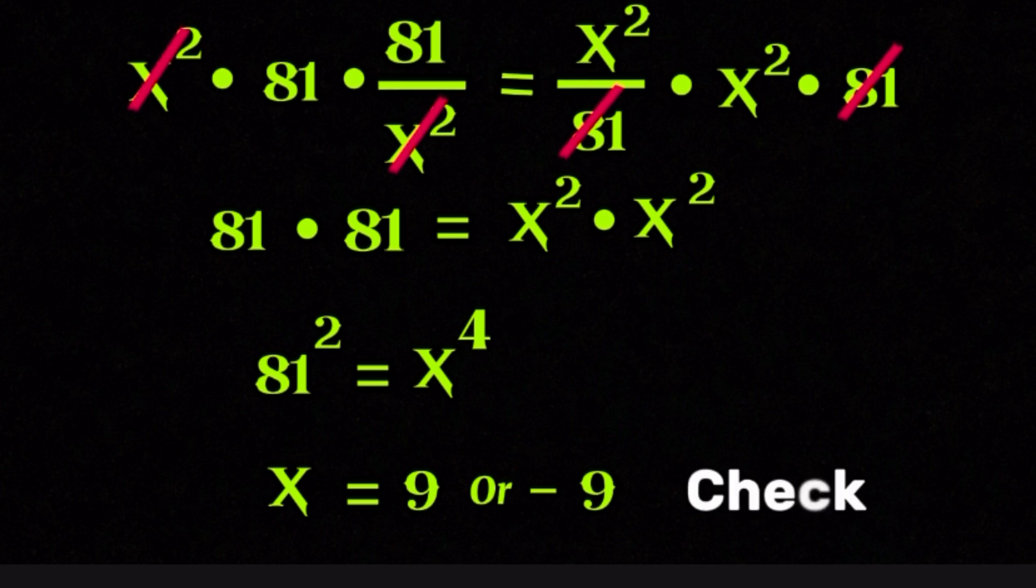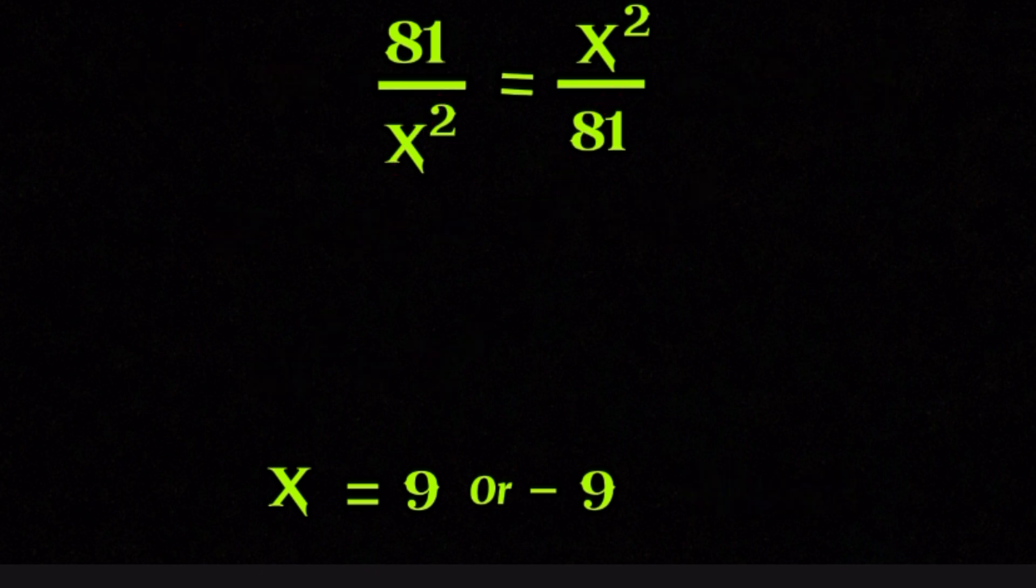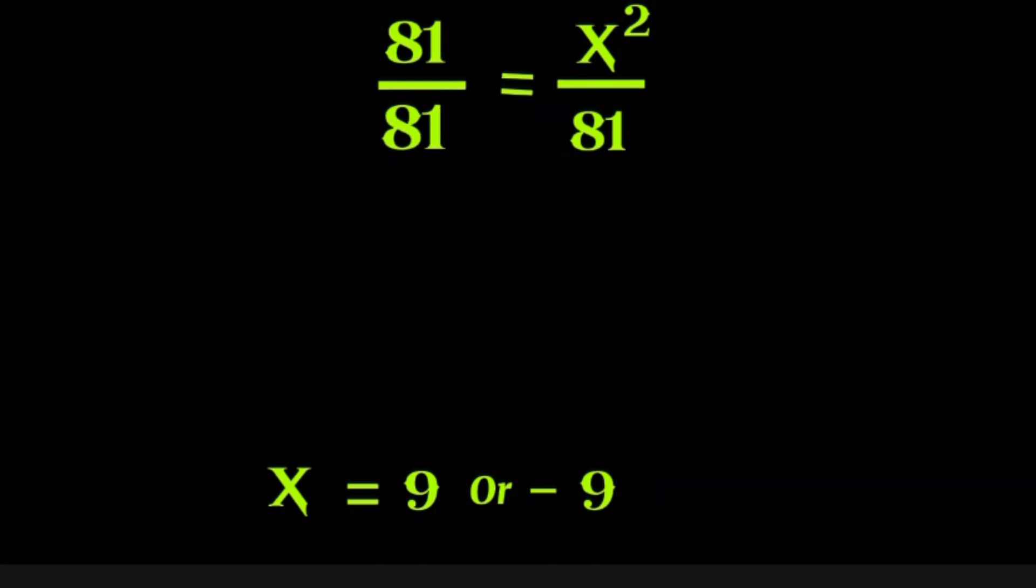We can quickly check this to be sure. If we substitute x equals 9 into the original equation, 81 divided by 9 squared gives 81 over 81, which is 1. And on the other side, 9 squared over 81 is also 1, so it works perfectly.